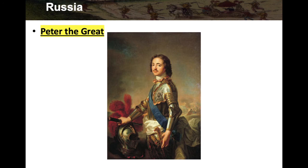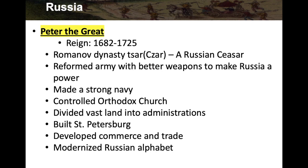We're going to talk about two Russian leaders. First is Peter the Great, who reigned 1682 to 1725. He was from the Romanov dynasty, and his title was Tsar — T-S-A-R or C-Z-A-R — basically like a Russian Caesar or emperor. He reformed his army with better weapons, created a strong navy, controlled the Orthodox Church, and divided Russia's vast lands into administrations. He built St. Petersburg — named after him — developed commerce and trade systems, and modernized the Russian alphabet.